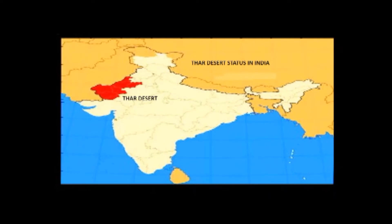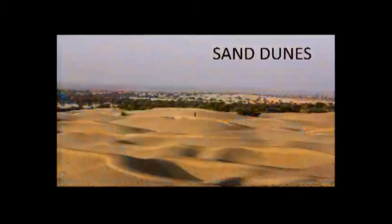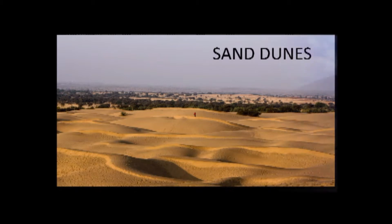Thar Desert is located to the west of the Aravalli Range in Rajasthan. There is very low rainfall in the desert throughout the year, so we find dunes of sand all around.